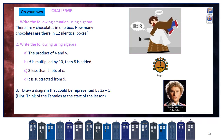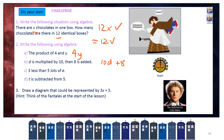Practice examples: Write the following situation using algebra. There are V chocolates in a box — how many chocolates in 12 boxes? We have 12 lots of V, written as 12V, which means 12 times V. Product of 4 and Y is 4Y — product means times. D is multiplied by 10, then 8 is added: read it out sequentially and work it out step by step, giving 10D plus 8.